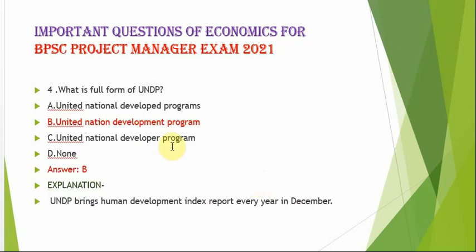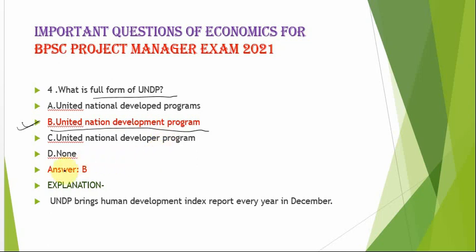The next question is: what is the full form of UNDP? The correct option is option B. The full form of UNDP is United Nations Development Programme. UNDP brings out the Human Development Index report every year in December.